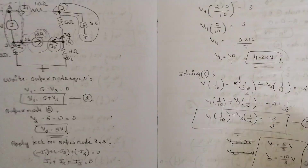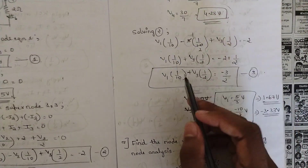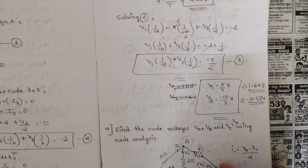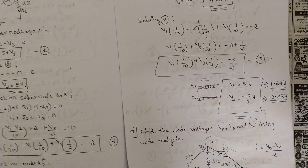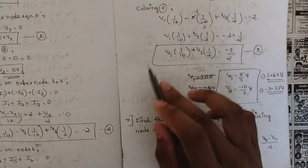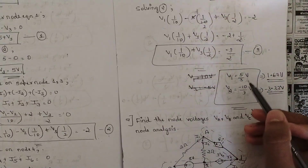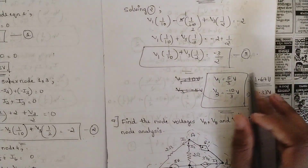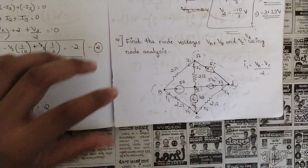Substituting V2 = 5 in Equation 2, we get: V1 × (1/10) + V3 × (1/2) = -3/2, named Equation 3. Put this in the calculator to find V1 and V3. We get V1 = 5/3 ≈ 1.66 volts and V3 = -10/3 ≈ -3.33 volts. So all four node voltages V1, V2, V3, V4 are determined.